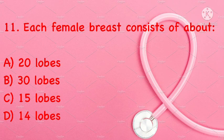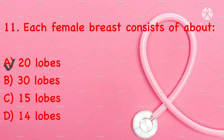The female breast consists of about how many lobes? 20 lobes, 30 lobes, 15 lobes, or 14 lobes. Correct answer is A: 20 lobes.